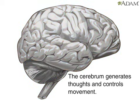The cerebral cortex is the outside portion of the cerebrum, also called the gray matter. It generates the most complex intellectual thoughts and controls body movement.